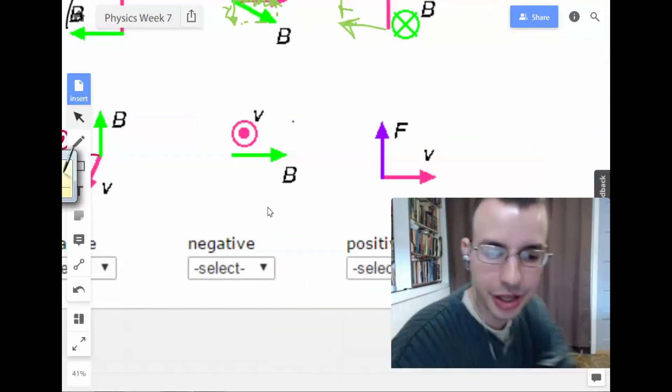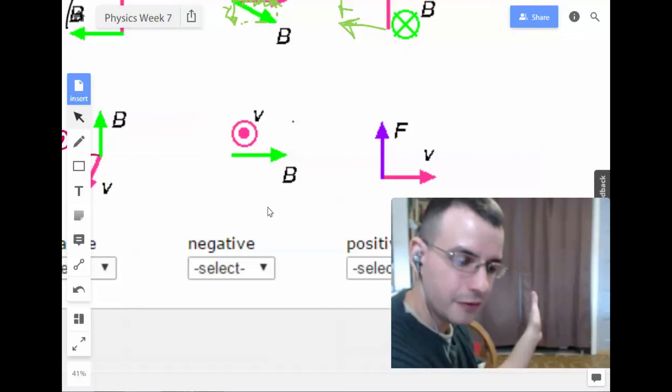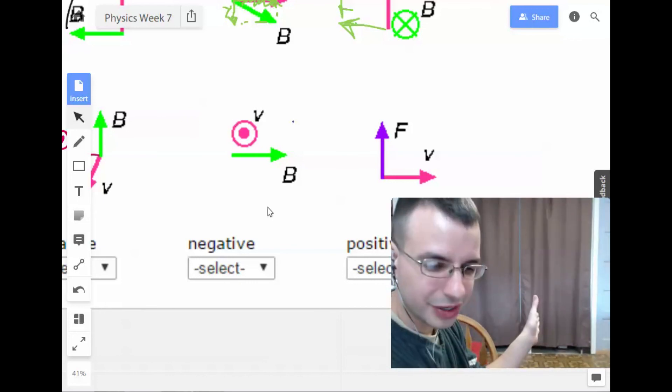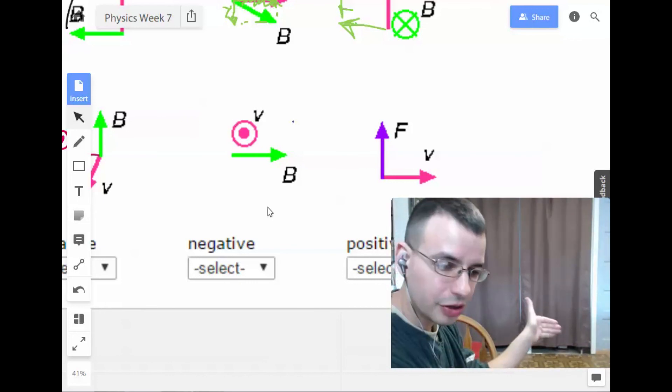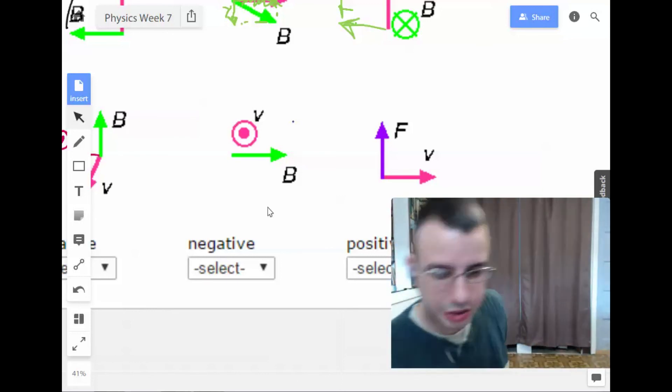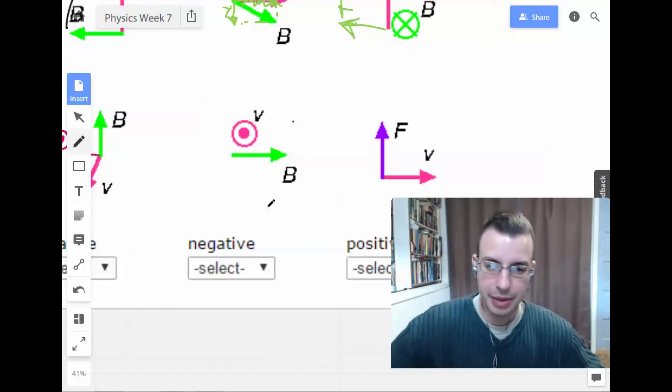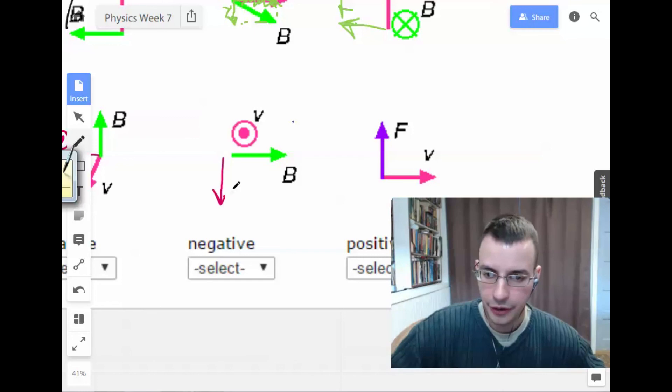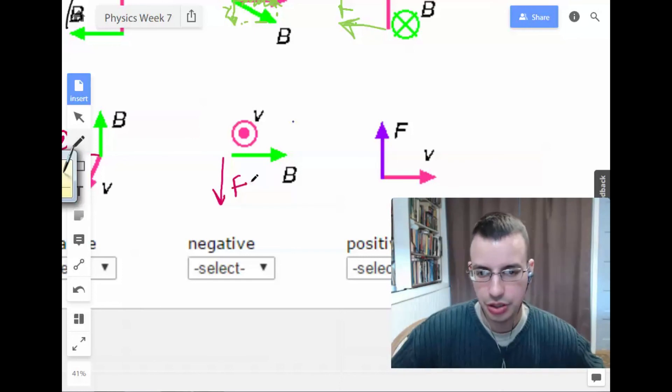Now I got another one here. So we got V cross B upwards, but it's negative. So it's going to be downwards. Force going down.